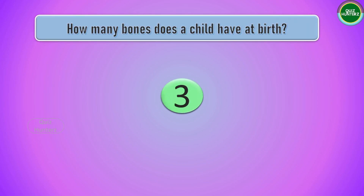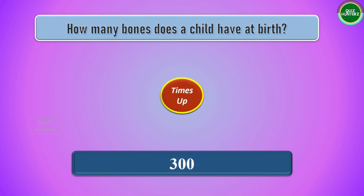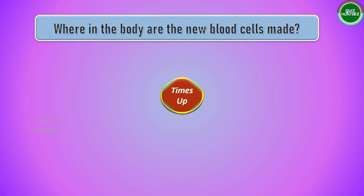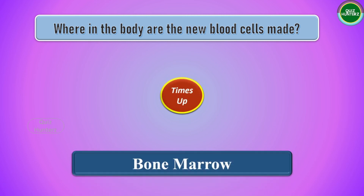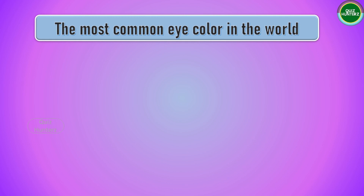Next question: how many bones does a child have at birth? The answer is 300 bones. Next question: where in the body are new blood cells made? The answer is bone marrow. Next question: what is the most common eye color in the world?